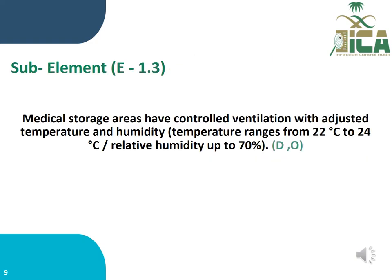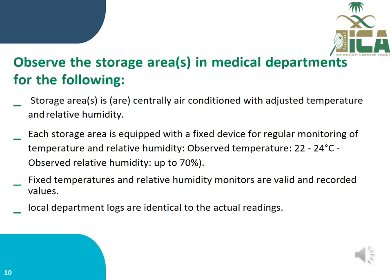Sub-Element E1.3: Medical storage areas have controlled ventilation with adjusted temperature and humidity. Temperature range: 22°C to 24°C; relative humidity: up to 70%. Assessed by documentation and observation. The storage area should be centrally air-conditioned. Each storage area must be equipped with a fixed device for regular monitoring of temperature and relative humidity. Observe temperature readings of 22–24°C and humidity up to 70%. Fixed monitors must be valid, and recorded values must match actual readings in local department logs.